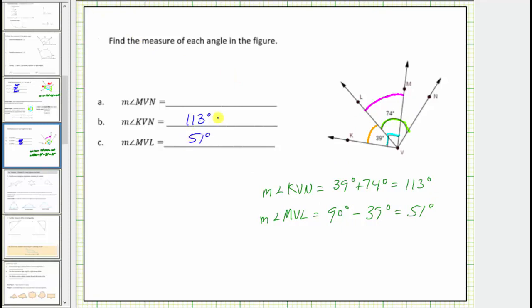To check our work, let's label this angle. If this angle is 51 degrees, notice how 51 degrees plus 39 degrees equals 90 degrees. These two angles together do form the right angle KVM.